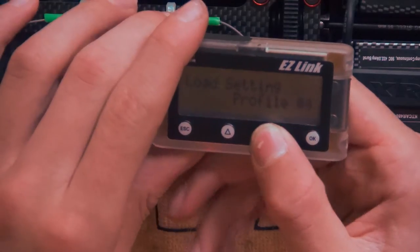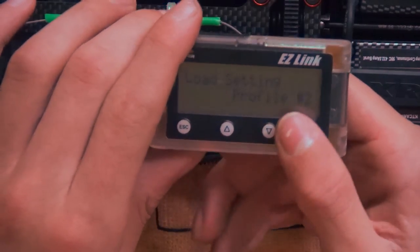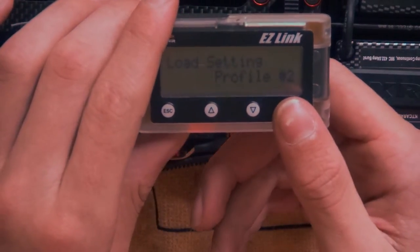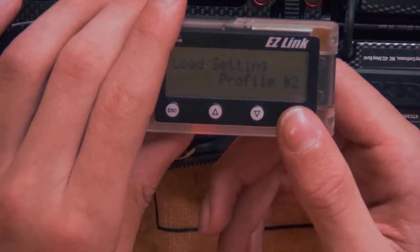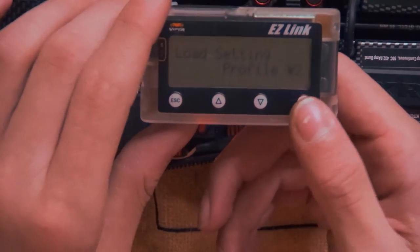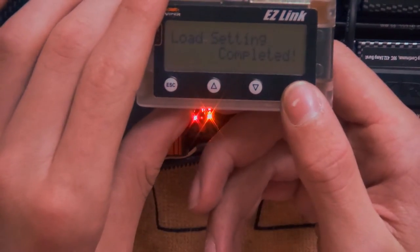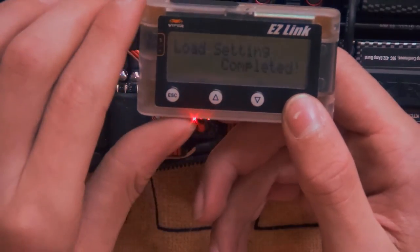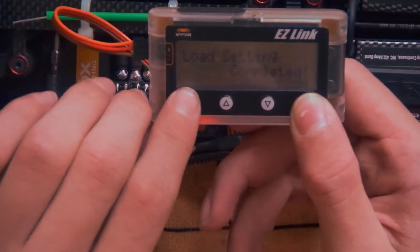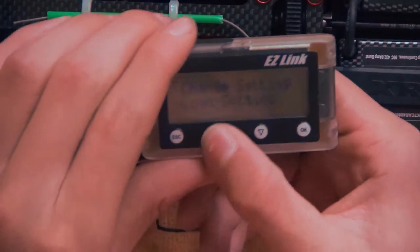So I will go to profile 2 because that is for modified brushless motors 4.5 turns to 9.5. Profile 2, and the loading is complete. Now I will go to change settings.